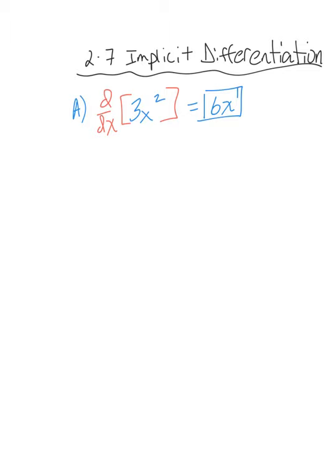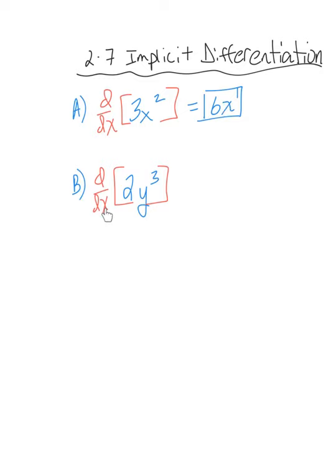We have to use what's called implicit differentiation. For example B, find the derivative of 2y³. We're essentially going to use the same power rule, but notice that when we're finding the derivative with respect to x, the variables agree in the x case, so we just use the simple power rule. But here the variables don't agree.